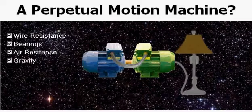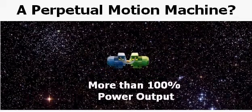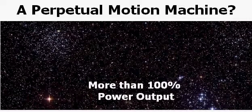According to the law of conservation of energy, the only way you could get more power out of this type of machine is to convert the mass of the perpetual motion machine itself to energy, causing it to disappear. Some believe that all you need to do is add a larger generator, but the problem is that the electrical load is still a load, and that load will be transferred to the motor.